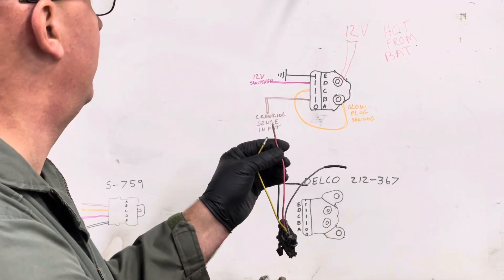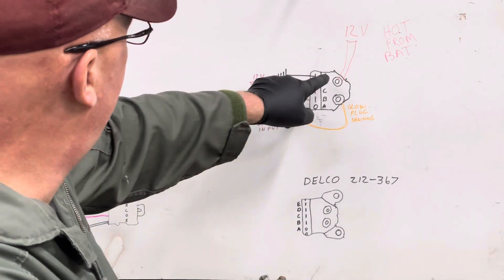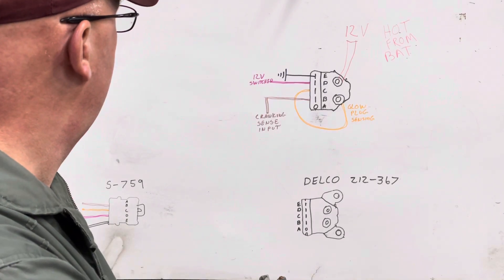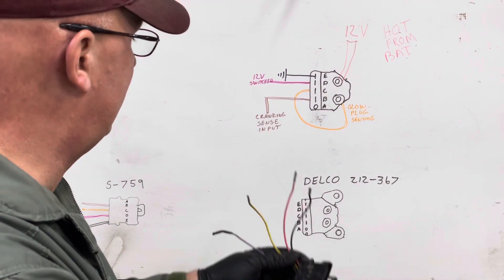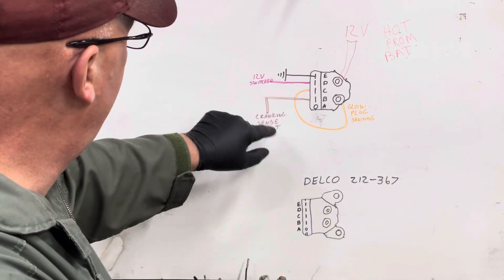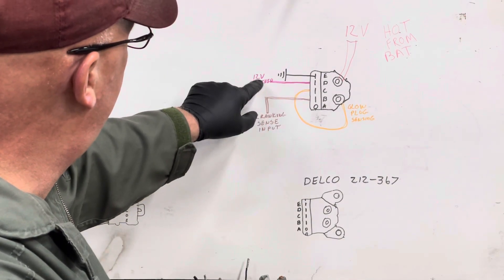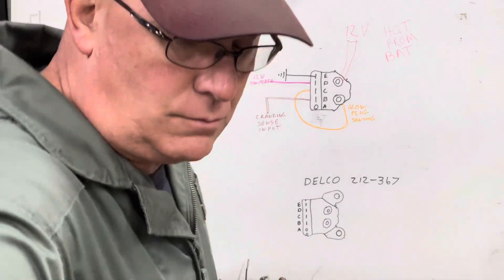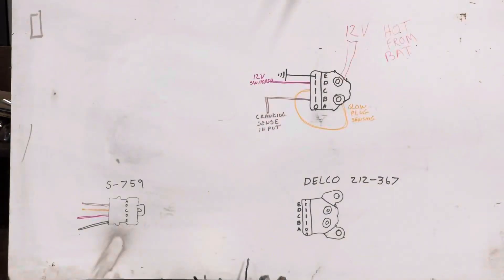Terminal E is the ground. So that's it, four wires, very simple. One loop back around, one to the purple wire, pink wire, black wire. Hopefully that makes it easy for people to tell what's going on.